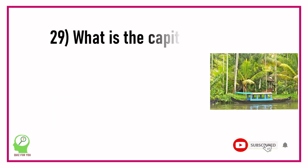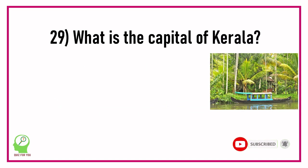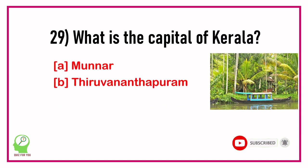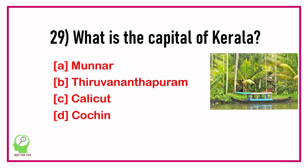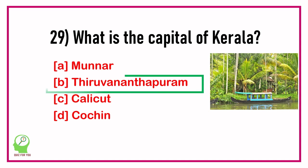Question number twenty-nine: What is the capital of Kerala? Options are: Munnar, Thiruvananthapuram, Calicut, Cochin. Answer: Thiruvananthapuram.